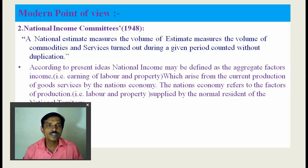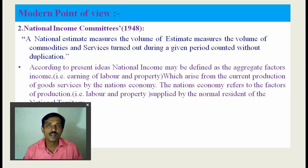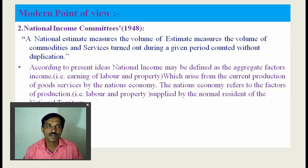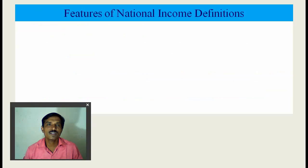According to the present idea, national income may be defined as aggregate factor income — the factors being land, labor, capital, and entrepreneurs — arising from the current production of goods and services of the national economy. National income refers to the income from factors of production — labor and property — supplied by the normal residents of the national territory.